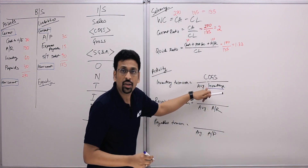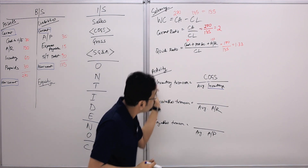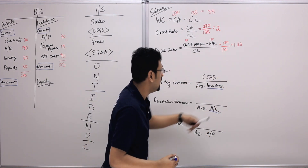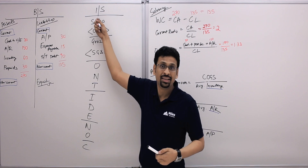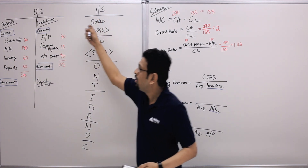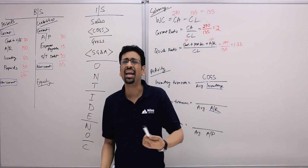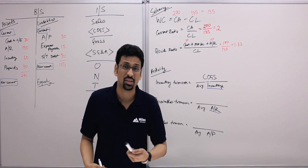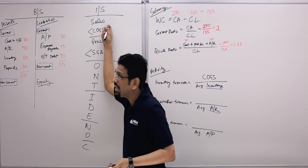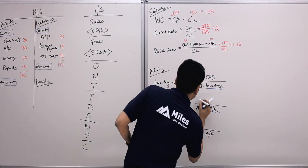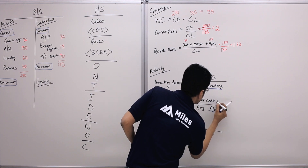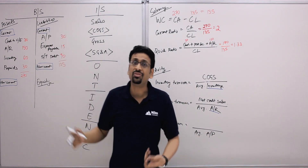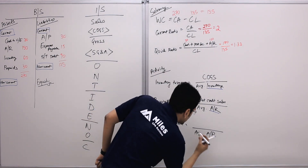Inventory is the denominator because it's inventory turnover. For receivables turnover, the numerator is net credit sales — sales less discounts less returns, and we use credit sales because cash sales don't generate receivables. For payables turnover, the denominator is average accounts payable and the numerator is net credit purchases.